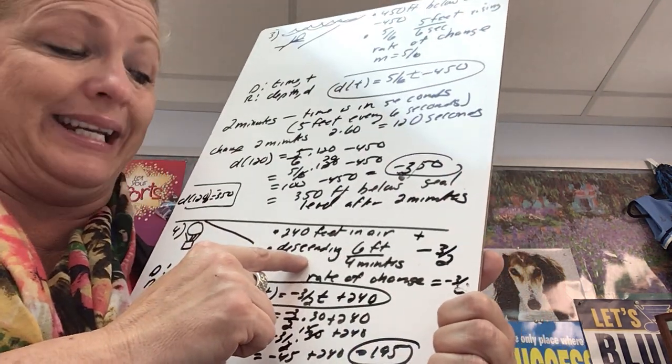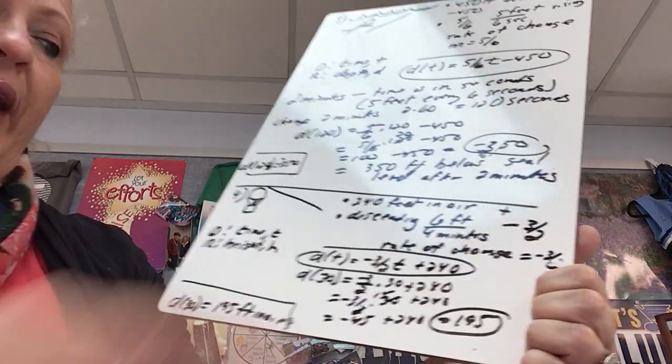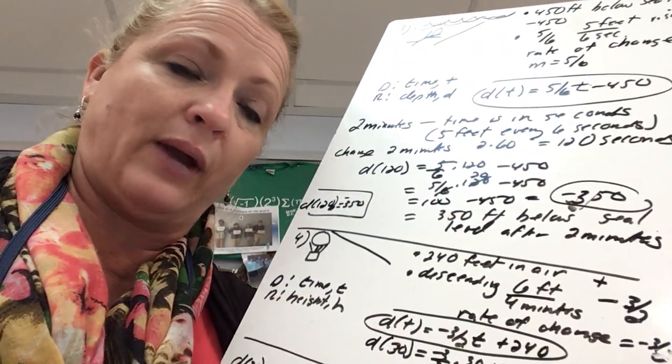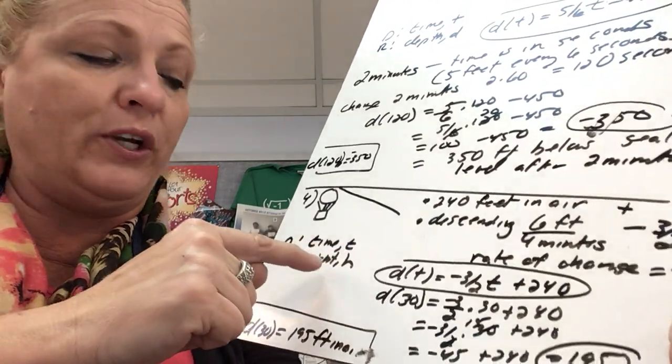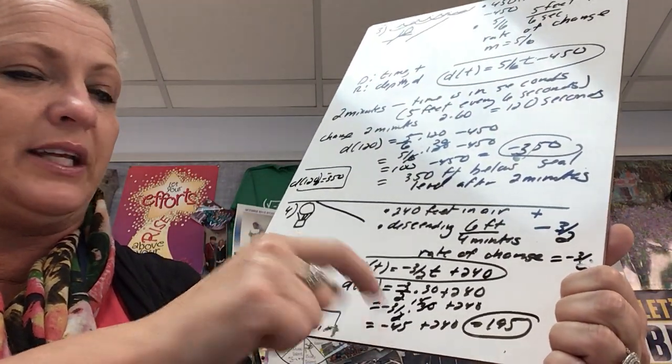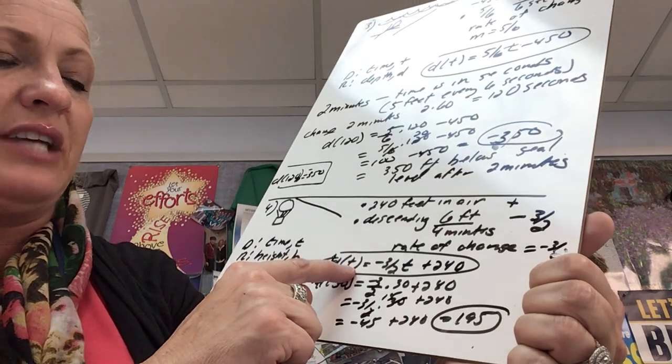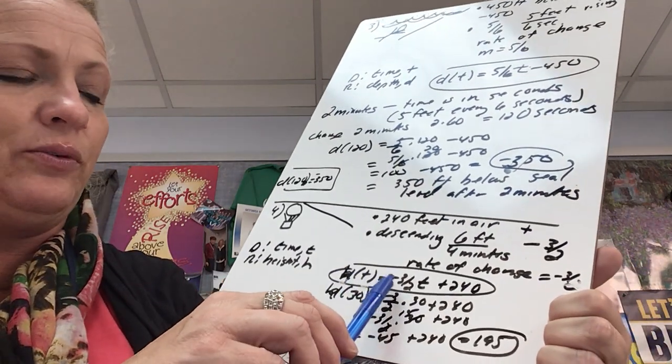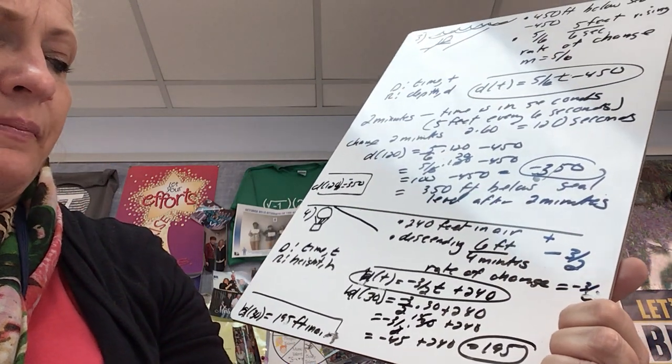Since it is descending, it is going down, that's why it is a negative. And I reduce 6/4 to 3/2. So again I wrote out the information that I underlined in the problem. Now before I write my equation, I decide on what is my domain, what is my range. So my domain, the problem even told you that the height is a function of time, which means that my domain is time and my height is my range. So height is a function of time: h of t equals negative 3/2 t plus 240. Could you have written it as y equals negative 3/2 x plus 240? Sure.